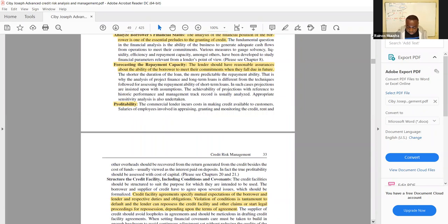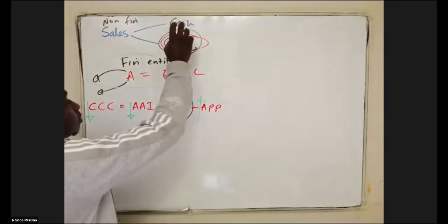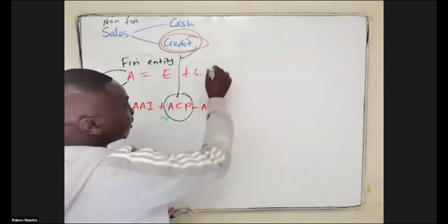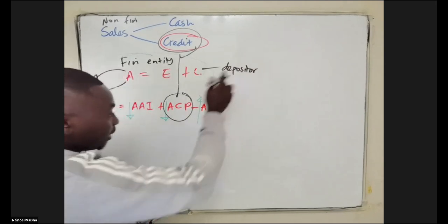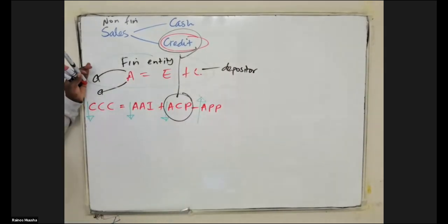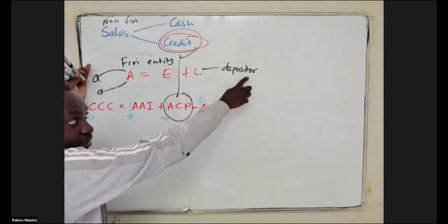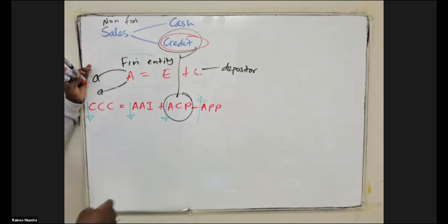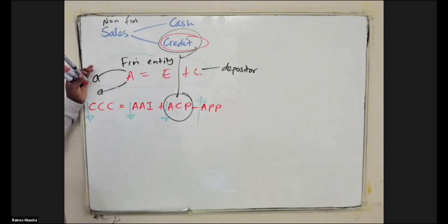The next stage looks at profitability. A commercial lender incurs costs in making credit available — salaries of employees involved in appraising, granting, and monitoring credit, plus rent and other overheads — which should be recovered from the return on credit, besides the cost of funds. Whatever return is generated from financial assets must be more than the interest paid to depositors and must also cover other operating expenses, leaving something for the owners of the business.